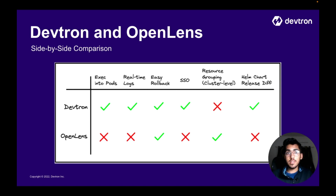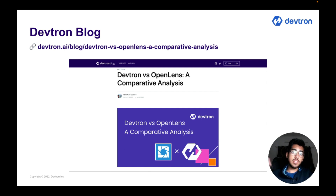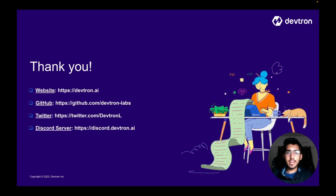Helm chart release diff is available in Devtron — you can view release diffs and keep track of different versions — but this is currently missing in OpenLens. If you want to dig deeper, you can check out the blog where a comparative analysis between these two tools has been done; the link is in the description box. That's all for today. Feel free to reach out via Devtron's social handles if you face any issues, and see you in the next one.